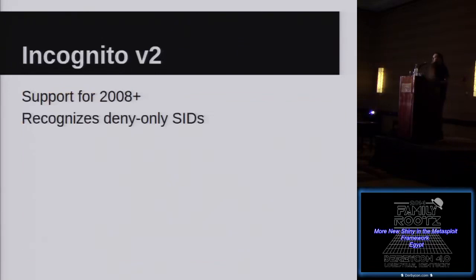The next big thing is Incognito v2, which has support for 2008 and newer operating systems — that's the biggest change. It's also got support for recognizing deny-only SIDs, which are intended for facilitating UAC. Previously you would see stuff that you thought you'd be able to use to escalate, but you couldn't actually use it. Now that stuff's not shown anymore.